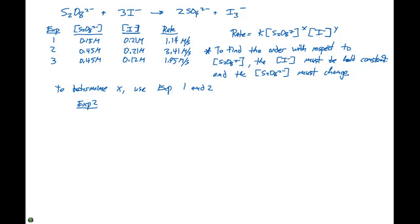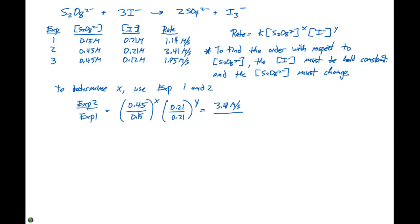If we take experiment two over experiment one, just like we did in our last example, we have the concentration of S₂O₈²⁻, which would be 0.045 divided by 0.15, to the X power, times 0.21 divided by 0.21 to the Y power. This equals the rates, which are 3.41 molar per second divided by 1.14 molar per second. As you can see, 0.21 divided by 0.21 is going to be one, so one to the Y power is one, and we can ignore this term.